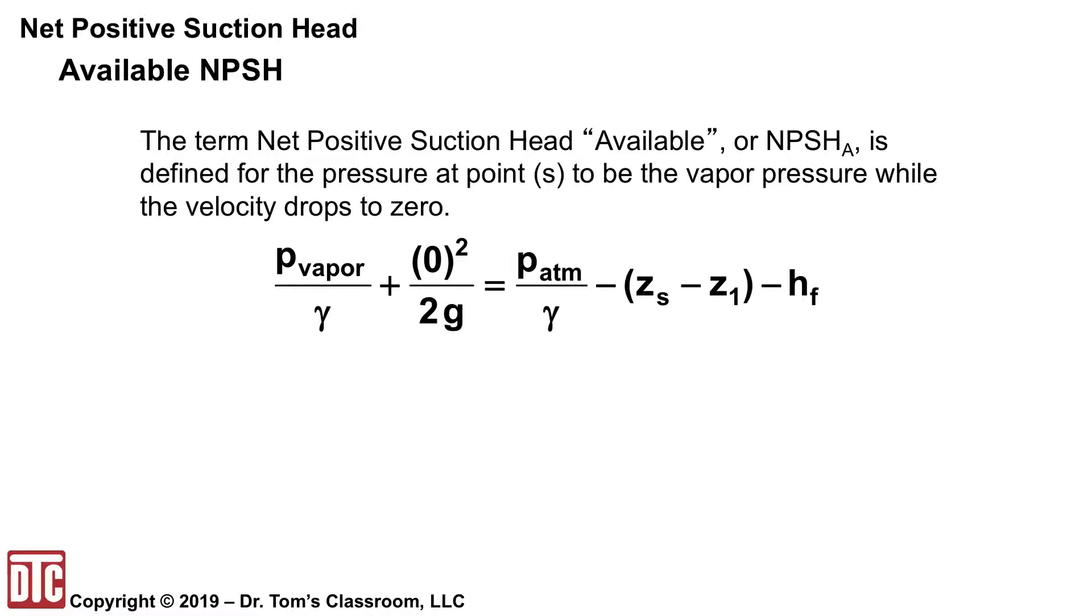Now the term net positive suction head available, which is NPSH subscript A is defined for the pressure at point S to be the vapor pressure while the velocity drops to zero, the available part here. So that's its definition.